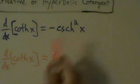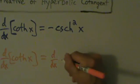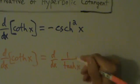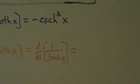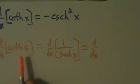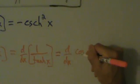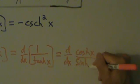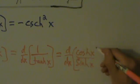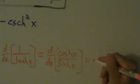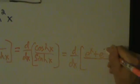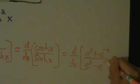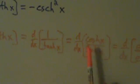So coth of x is actually 1 over the hyperbolic tangent of x, so we could do quotient rule on that. Or we could go back and say hyperbolic cotangent is actually equal to hyperbolic cosine divided by hyperbolic sine. Or we could go back to the definition in terms of e — that's d/dx of (e^x + e^(-x)) / (e^x - e^(-x)). So we could do quotient rule on any of these.